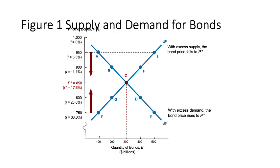If the price of a bond is 1000 and its face value is 1000, there is no interest rate — it is zero. When the price decreases, the interest rate increases, and when the price increases, the interest rate decreases, until we reach equilibrium point C where the price is 850, the interest rate is 17.6 percent, and the quantity demanded and quantity supplied are both equal at 300.